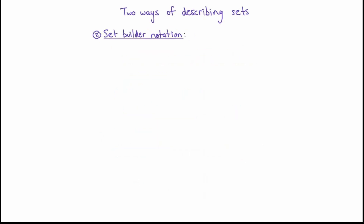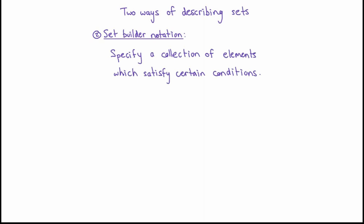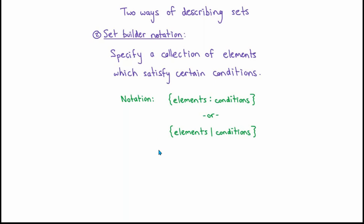There's another common way of describing sets using what is called set builder notation. Set builder notation specifies a collection of elements and a collection of conditions, and picks out the collection of all elements which satisfy those conditions. You use curly braces to enclose your set, then specify a collection of elements and conditions separated usually by either a colon or a vertical line. I may use either of these notations in my lectures. This notation is especially useful when filtering elements of an already-constructed set by imposing some conditions on them.